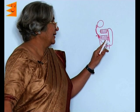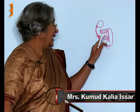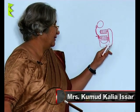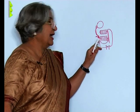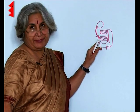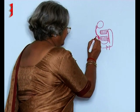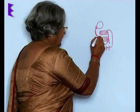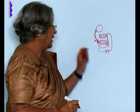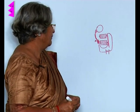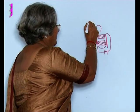Wires are coiled around the iron pieces and then they are connected through a cell with an iron strip which also has a screw. This is connected to another iron strip which has a hammer at its end — this is the hammer.